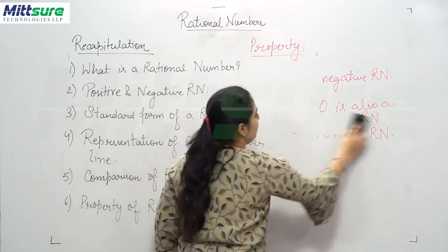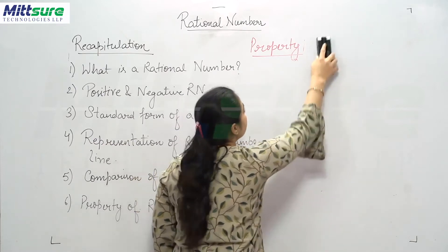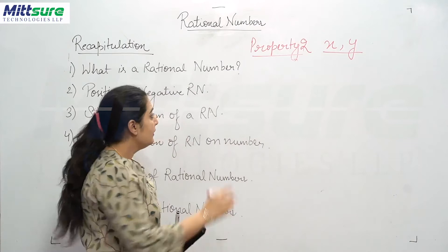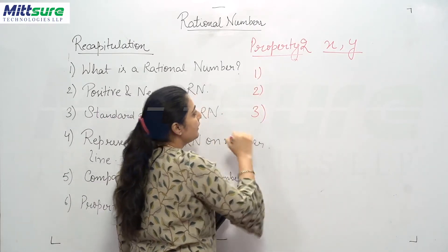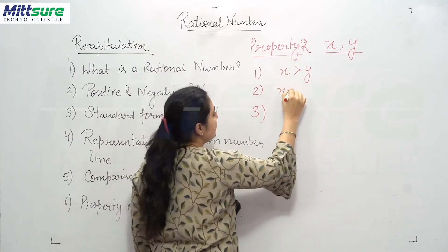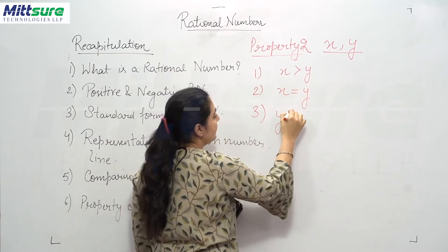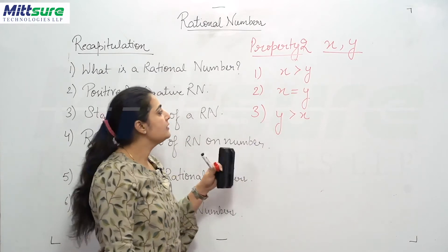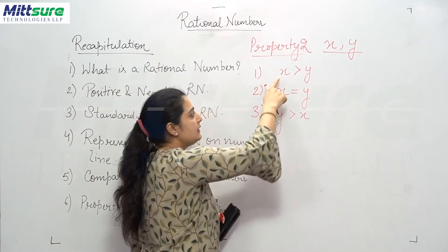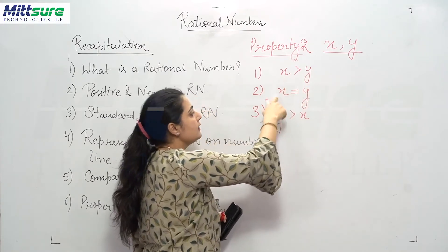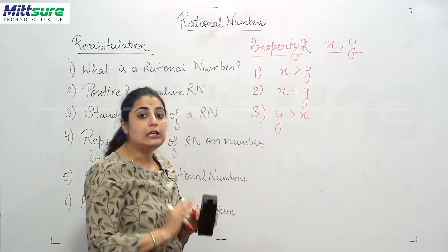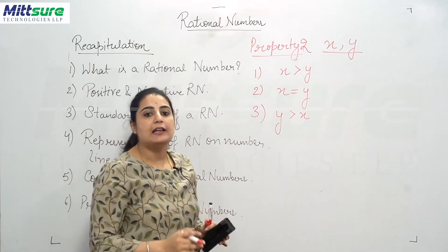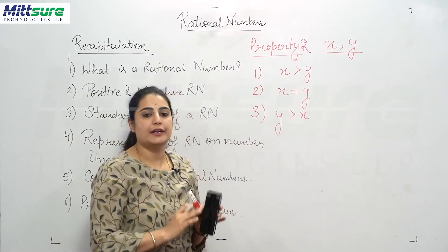Property 2: there can be a comparison between two rational numbers x and y. Again three conditions are possible — x is greater than y, x equals y, or y is greater than x. This compares the values of two rational numbers with each other.